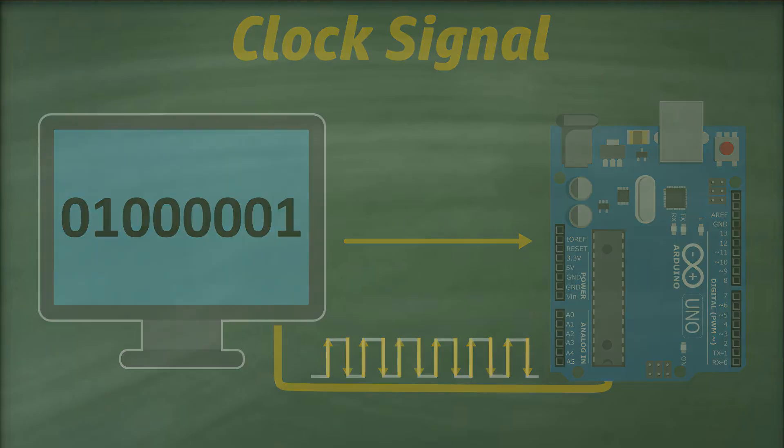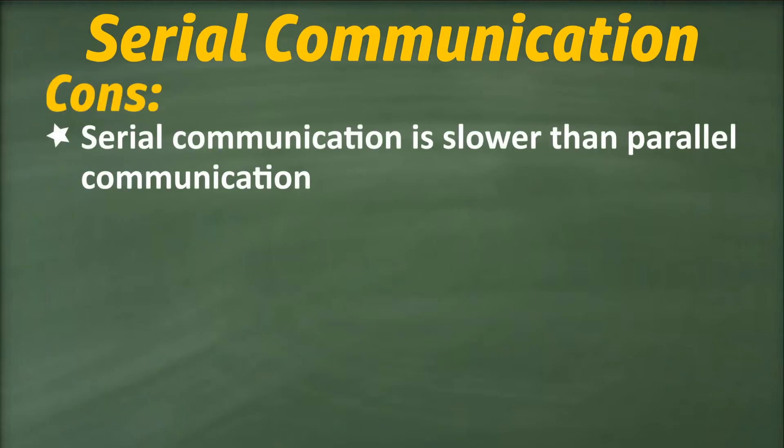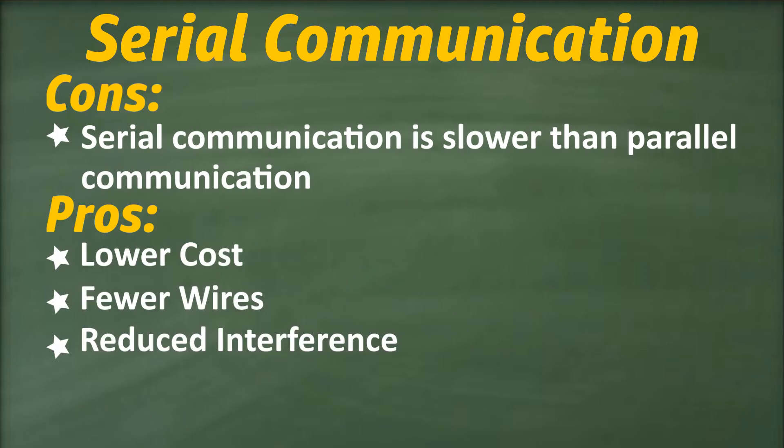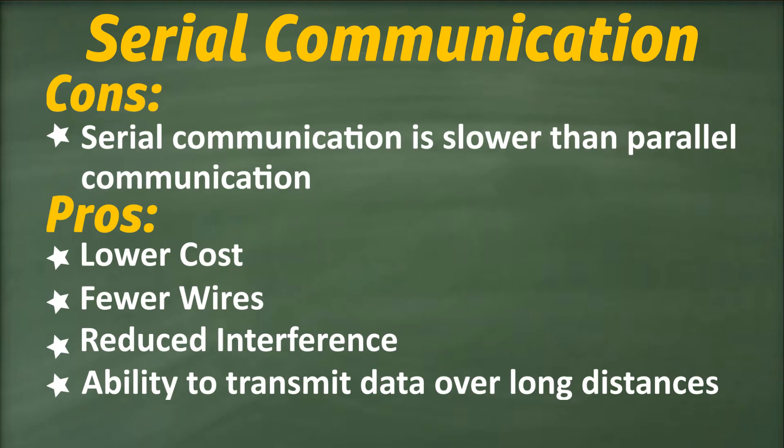So, although serial communication is slower than parallel communication, it is still more efficient than parallel communication due to its lower cost, fewer wires, reduced interference, and ability to transmit data over long distances.